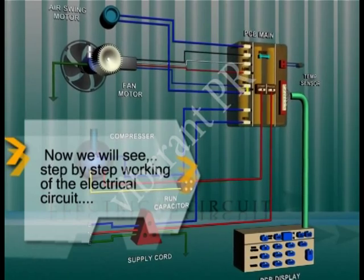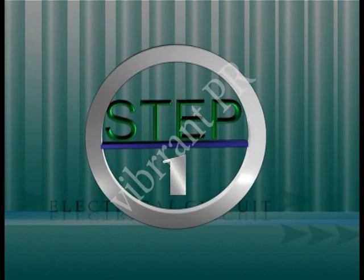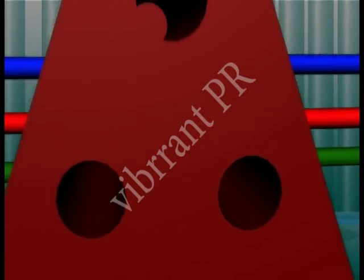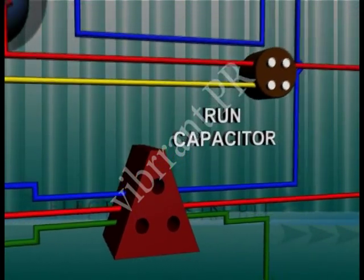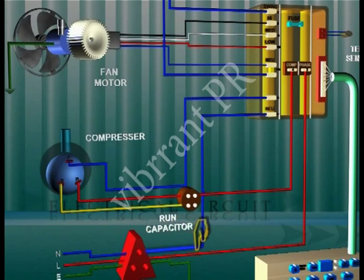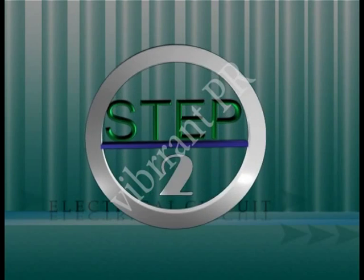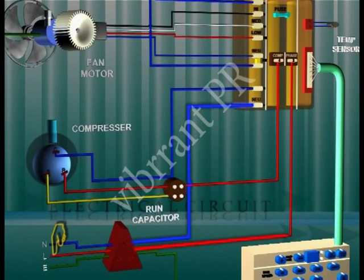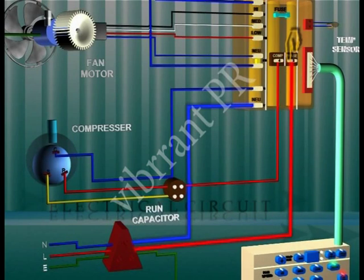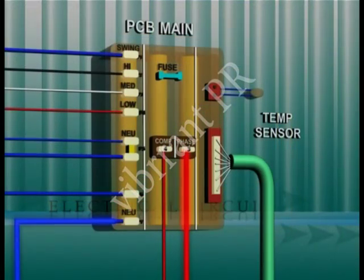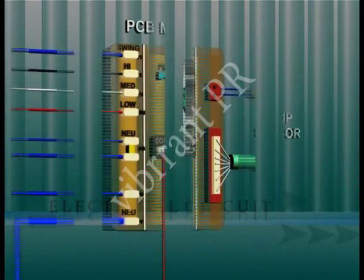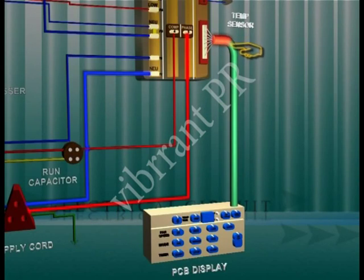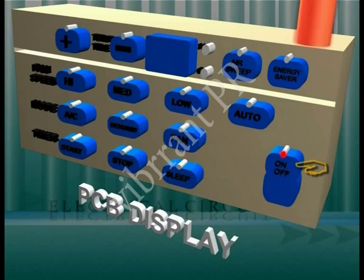Now we will see the step-by-step working of the electrical circuit. As the main switch MCB is switched on, the current flows from the neutral wire N to terminal P7 of the PCB main, energizing the PCB. Simultaneously, current flows from the live wire L to terminal 3 of the relay in the PCB main. The PCB is now on standby mode.